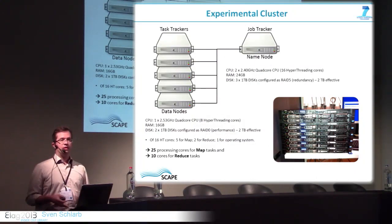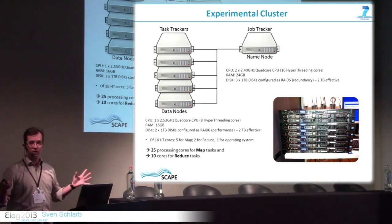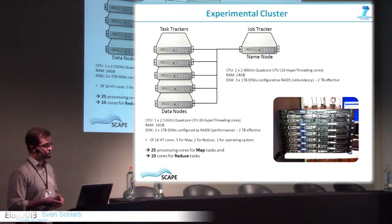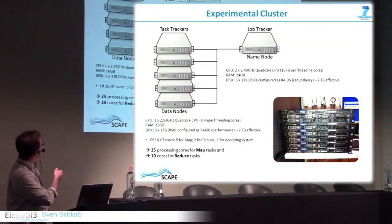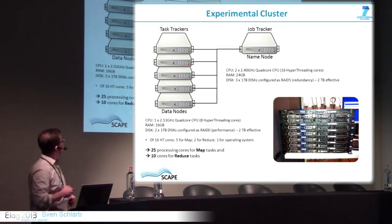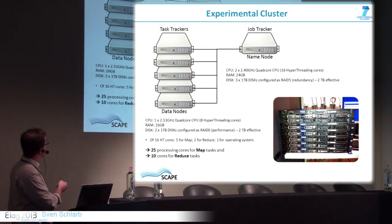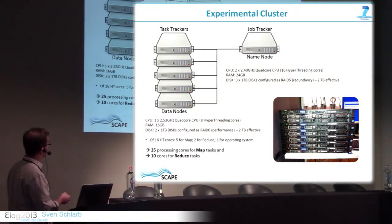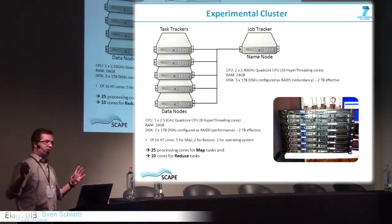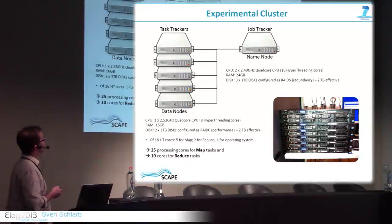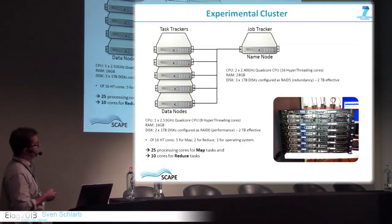At the Austrian National Library, we have a dedicated environment for the SCAPE project. It's a very small cluster — imagine that Hadoop companies have clusters with thousands of machines. We have four machines: one master and three slaves. Each machine has a CPU with eight hyperthreading cores. In the configuration, we assign 25 tasks for the map phase and 10 for the reduce tasks, so you can also parallelize the reduce phase to avoid a bottleneck.